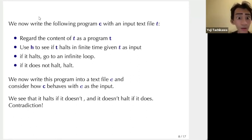So we can write such a program and you write this program into a text file C. And let's consider how this program C behaves if we use this text file C as the input. Well, this program then does the following. If the program C halts in finite time, if C is given as input, then it goes to an infinite loop. On the other hand, if the program H decides that C does not halt in finite time, then the program C halts. This means that it halts if it doesn't, and it doesn't halt if it does. This is a contradiction.